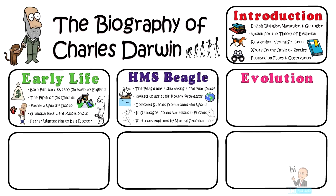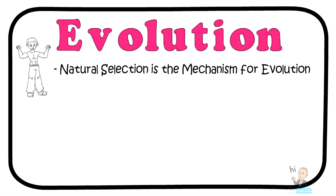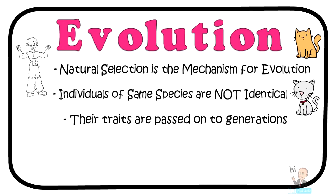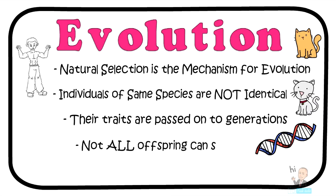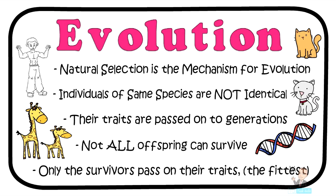Darwin proposed that natural selection was the mechanism that drives forward evolution. Natural selection is the process whereby organisms better adapted to the environment tend to survive and produce more offspring. Evolution begins with an understanding that individuals of the same species are not identical — for example, some cats may be faster, taller, or more agile than others. These traits are passed on from generation to generation. Not all offspring can survive, as there isn't enough food and shelter for all animals. Giraffes with the longest necks will be able to reach their food and survive, while short-necked giraffes won't. Only the survivors pass on their traits, so over time you will see more and more long-necked giraffes.